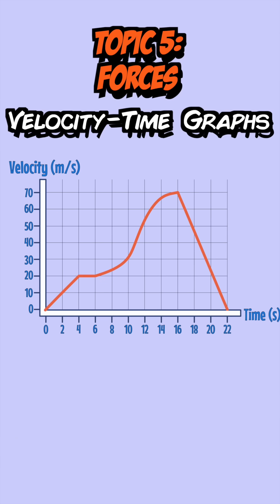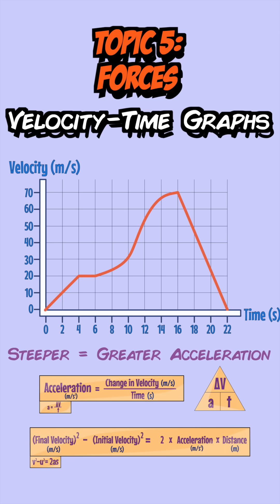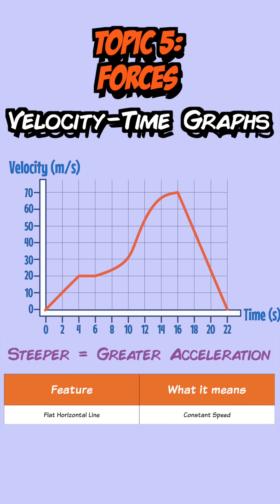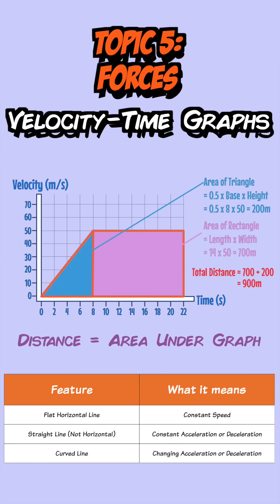On a velocity-time graph the steeper the line the greater the acceleration. Acceleration is given by its equation and can also be worked out using a second equation. A flat horizontal line represents constant speed, any other straight line means constant acceleration or deceleration, and a curved line means the acceleration is changing. You can also work out the distance traveled by finding the area under the graph.